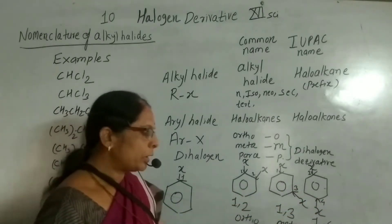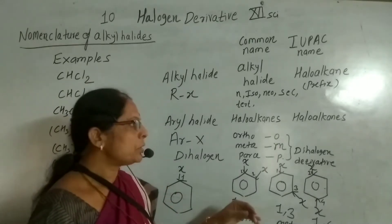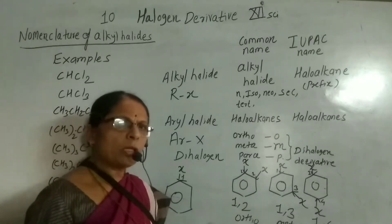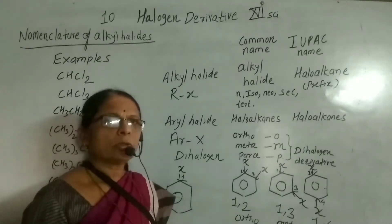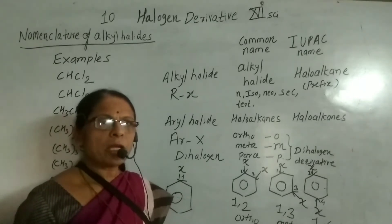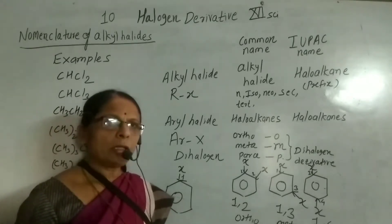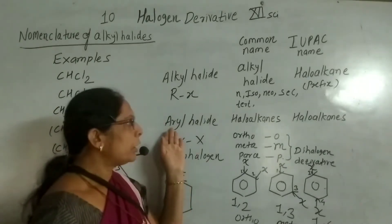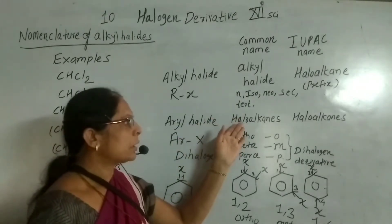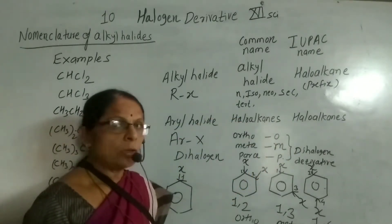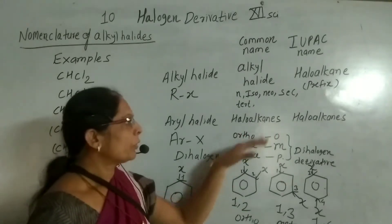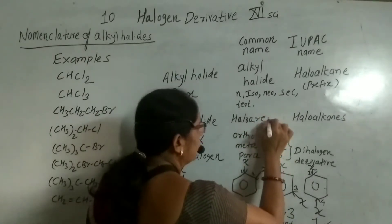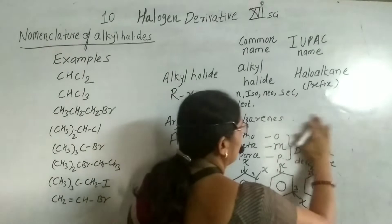The numbers 1,2 / 1,3 / 1,4 are used in the IUPAC system. If the haloarene contains more than two halogens, we give numbering to the halogens such that they have the lowest possible numbers, and write the name as haloarene. In aryl halides, names are given as haloarenes — not haloalkenes, but haloarenes.